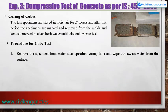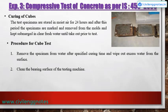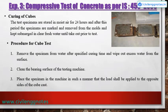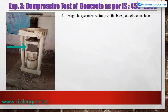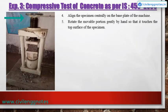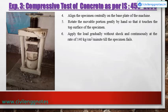Procedure for cube test: Remove the specimen from water after the specified curing time and wipe out excess water. Clean the bearing surface of the testing machine. Place the specimen so that the load shall be applied to the opposite sides of the cube as cast, and align it centrally on the base plate. Rotate the movable portion gently by hand until it touches the top surface, then apply load gradually without shock at 140 kg/cm² per minute until the specimen fails.